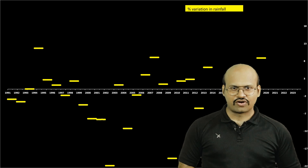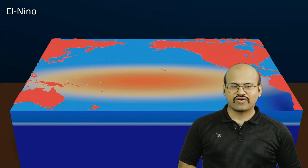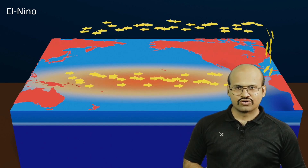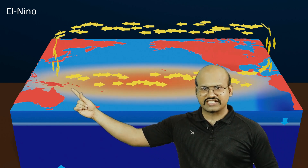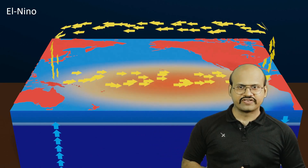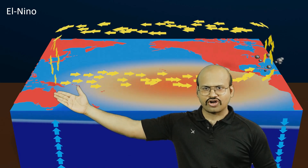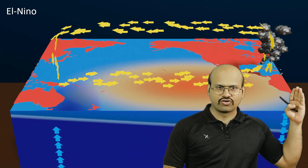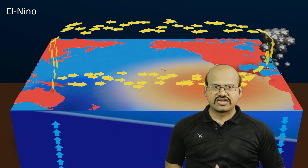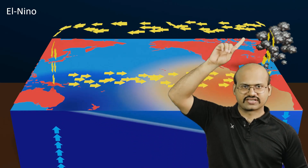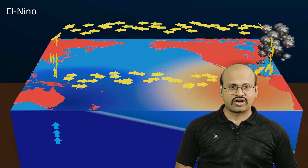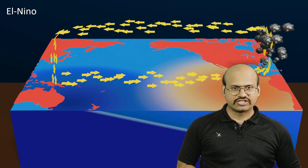One of the factors scientists found was El Niño. We know that in El Niño there is a reversal of winds in the South Pacific region. Because of this reversal, the rainfall which was occurring over Australia starts to occur over the South American region, and Australia faces a drought-like condition. This wind circulation is called Walker circulation, and the whole phenomenon is also called Southern Oscillation, or ENSO.